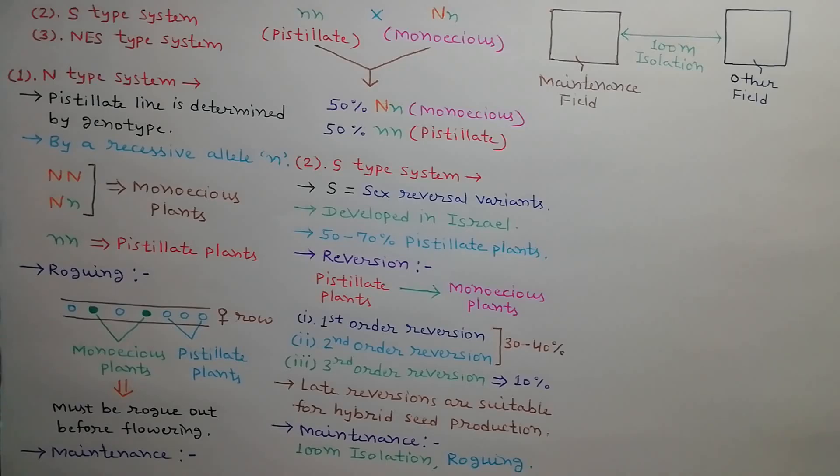S pistillate line can be maintained by growing in field with 100 meter isolation and by removing all monoecious plants.